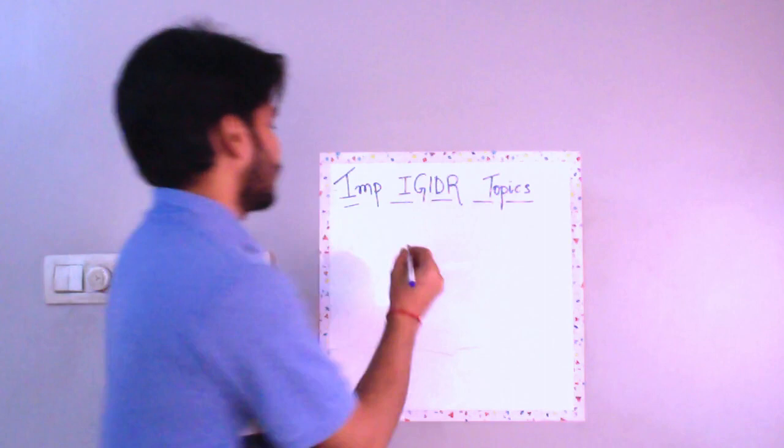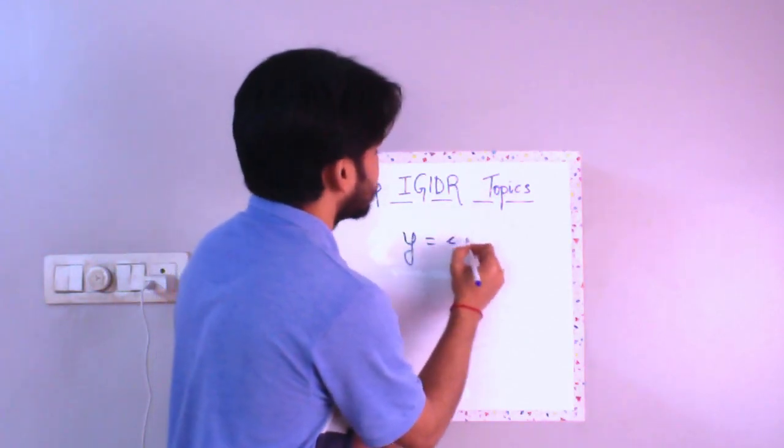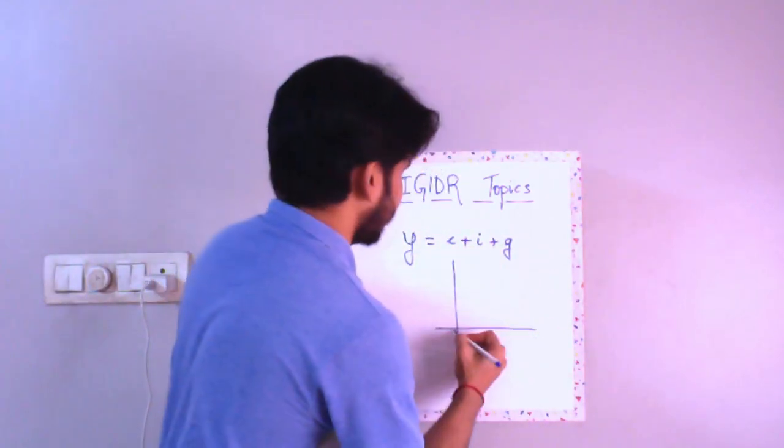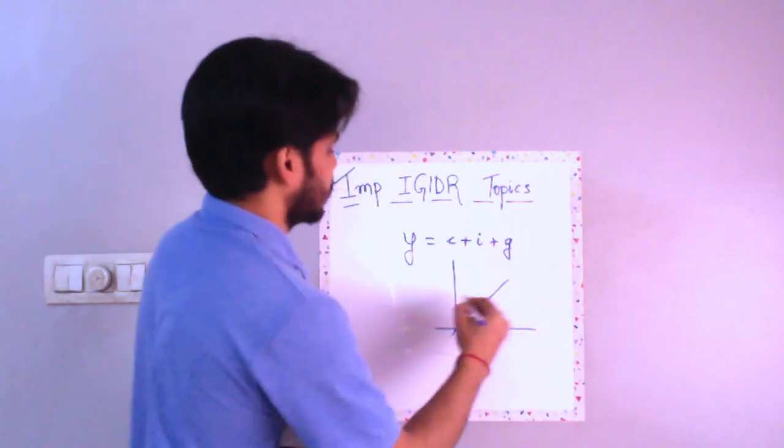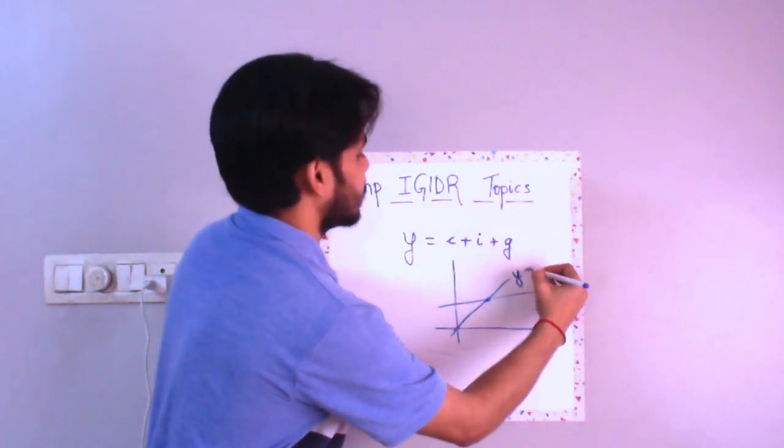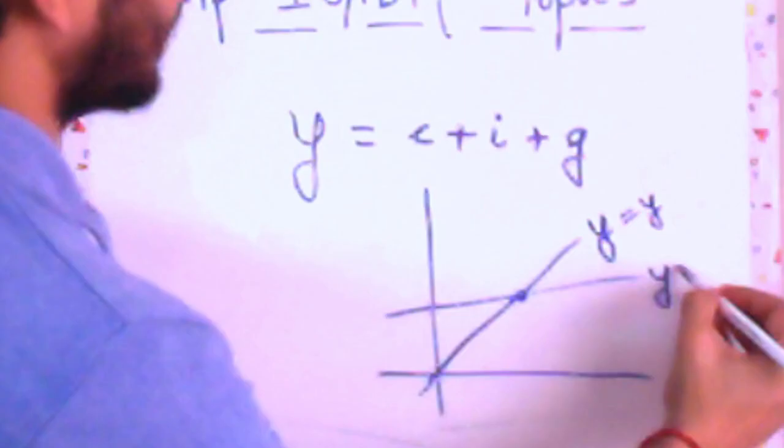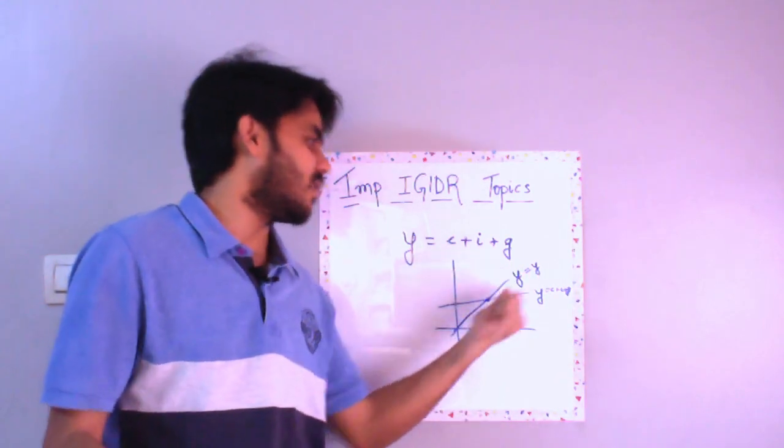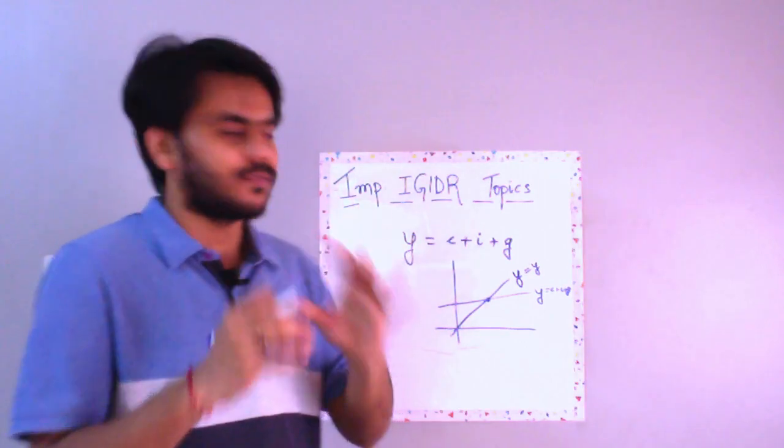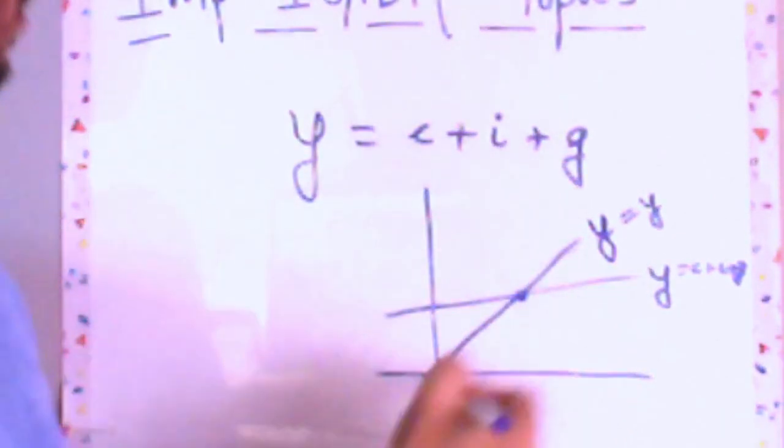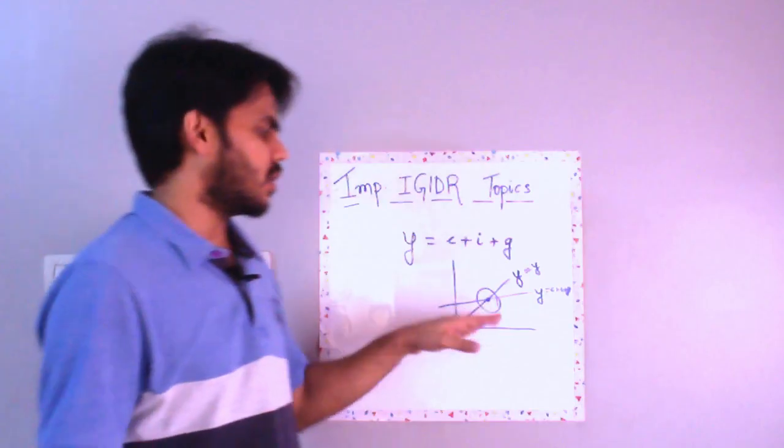Then what will be the next question? Next question will be based on this idea that y is equal to c plus i plus g. So you all must be knowing this graph that if you have this as your function, this is your equilibrium point. This is essentially y is equal to y and this is your y is equal to c plus i plus g. Don't ask me what is the meaning of y is equal to y. It's like saying that your demand is the same as your supply. That is what I'm denoting by y is equal to y. Maybe it's a bit of abuse of notations but you get the drift. Now, this y is equal to c plus i plus g is giving you the kind of your demand. So this guy over here is your supply, this is your demand, this is your kind of equilibrium point. This is important to calculate your multipliers.